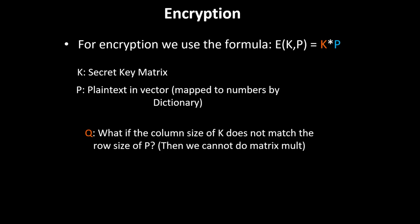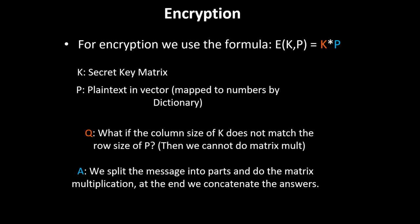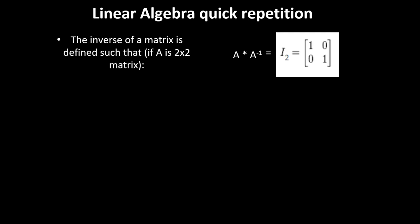A question that might arise is, what if the column size of K does not match the row size of P? Then we cannot do the matrix multiplication. The answer is that we split the message into parts, do the matrix multiplication for each of those parts, and then concatenate the answers to get the resulting encrypted message.